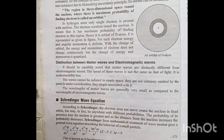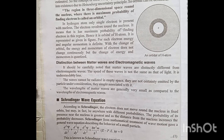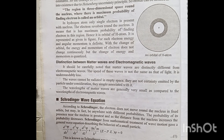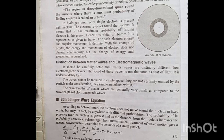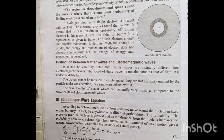Distinction between matter waves and electromagnetic waves: Matter waves are distinctly different from electromagnetic waves. The speed of matter waves is not the same as that of light — their speed is less. These waves cannot be radiated in empty space. They are not emitted by the particle; they are simply associated with it. The wavelength of matter waves is generally very small compared to the wavelength of electromagnetic waves.